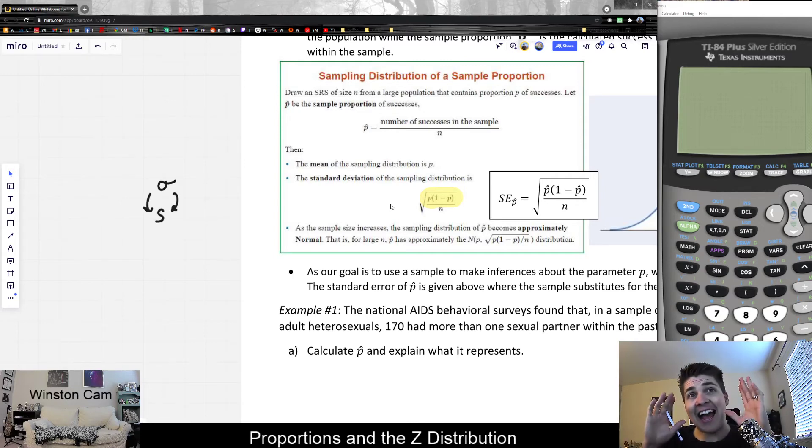But as we talked about, usually or often we don't actually know the standard deviation of the real population. But we know the standard deviation of our sample. We use that as an approximation to the standard deviation of the original. Otherwise, nothing changed.